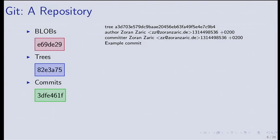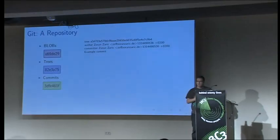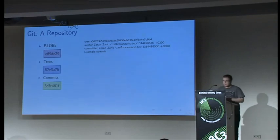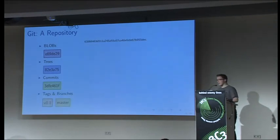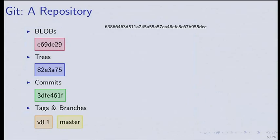Third are commits. Commits are snapshots of the state of a repository at some point in time. They always have a reference to a tree and might have a reference to a parent, unless they are the most recent commit. Fourth, we have tags and branches, which are references to commits — just plain text files. The master branch is a file in your Git directory containing a SHA-1 in ASCII.